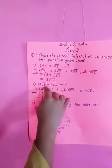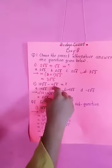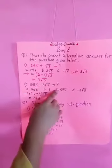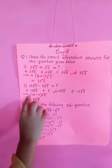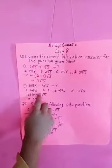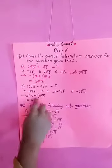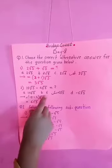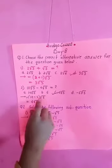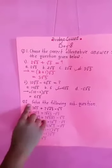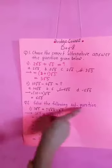Second: 10 cube root 5 minus 4 cube root 5 is equal to question mark. Answer: (10 minus 4) cube root 5, so 6 cube root 5. Answer is option C.